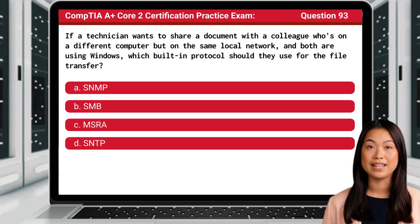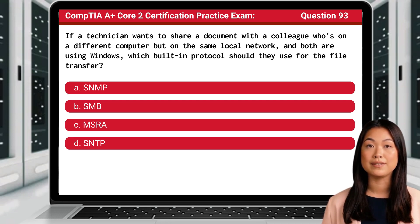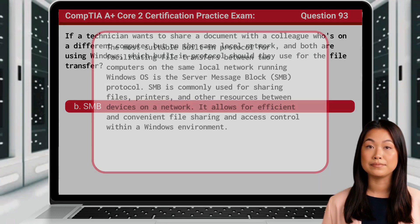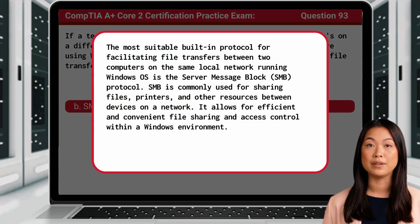Question 93. If a technician wants to share a document with a colleague who's on a different computer but on the same local network, and both are using Windows, which built-in protocol should they use for the file transfer? The answer is B, SMB. The most suitable built-in protocol for facilitating file transfers between two computers on the same local network running Windows OS is the Server Message Block, or SMB protocol.